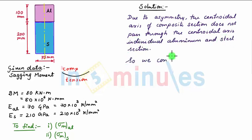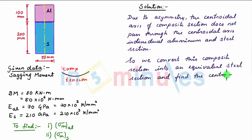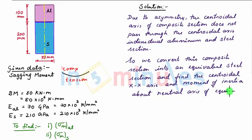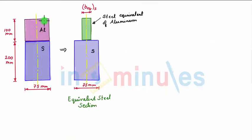So we convert this composite section into an equivalent steel section and find the centroidal xx axis and moment of inertia about neutral axis of equivalent steel section. So we see we have converted this composite section into an equivalent steel section where the depth of the section is maintained and only the width of this aluminium part of this composite section is converted into the width of equivalent steel part.